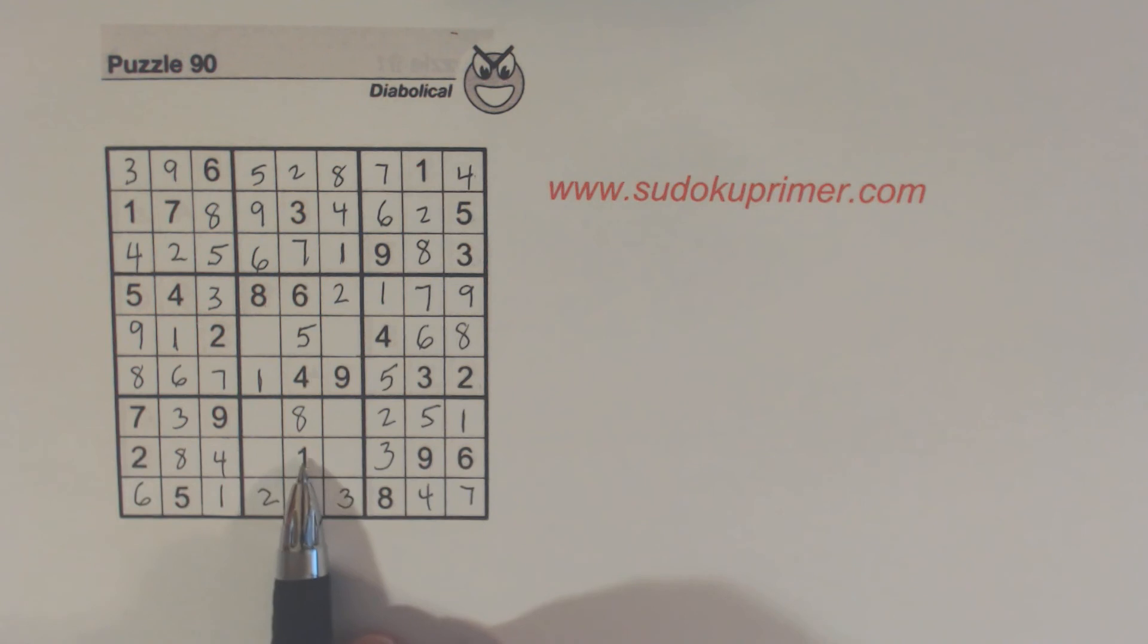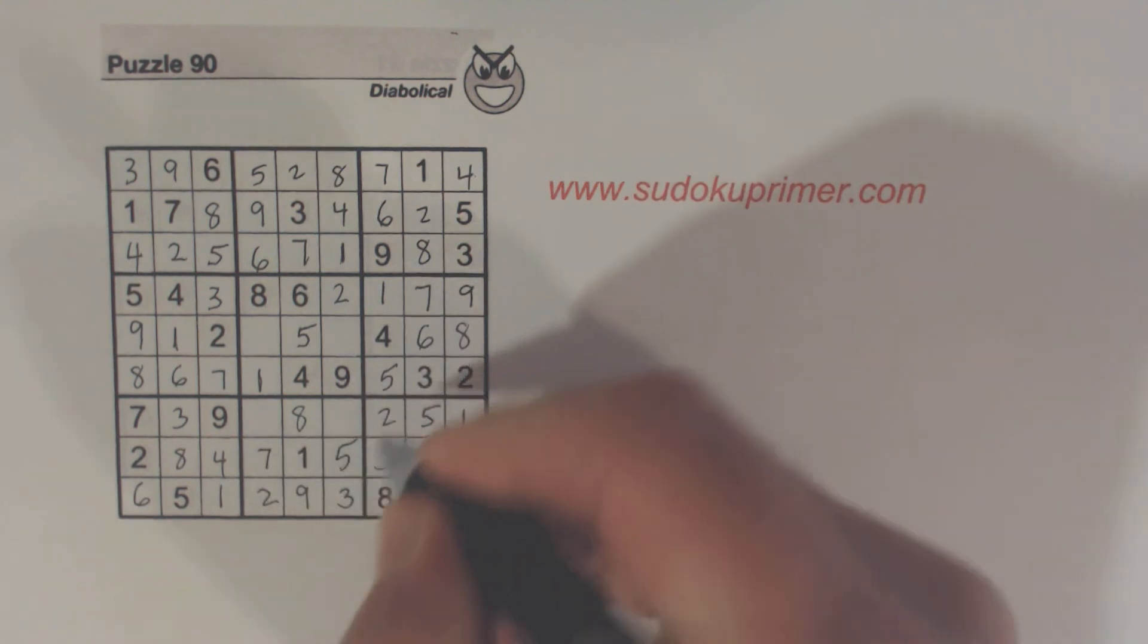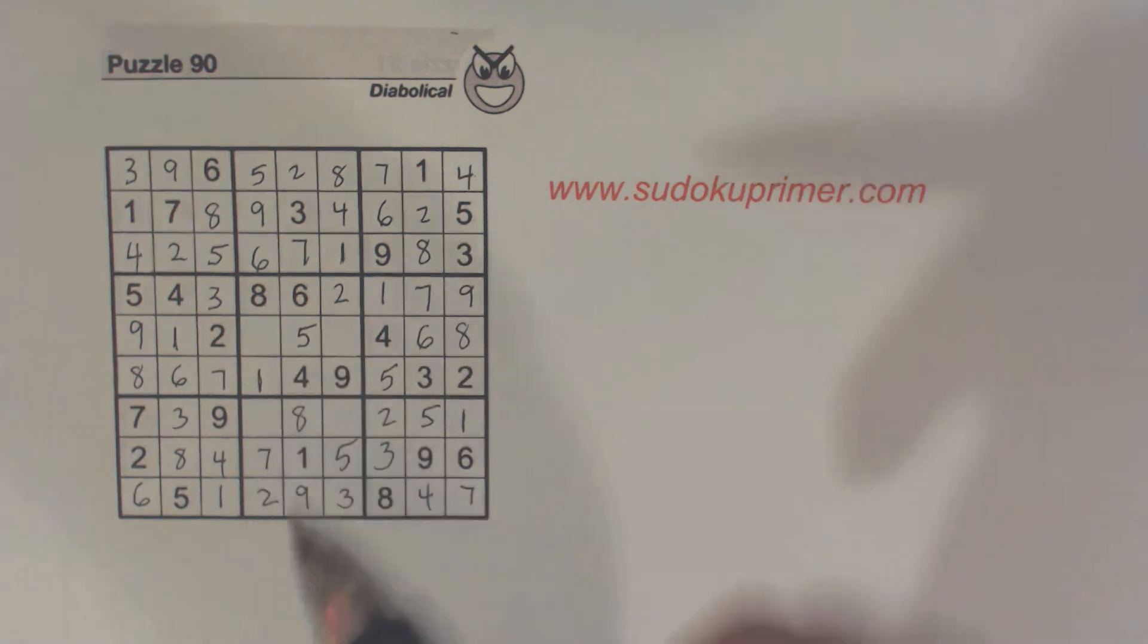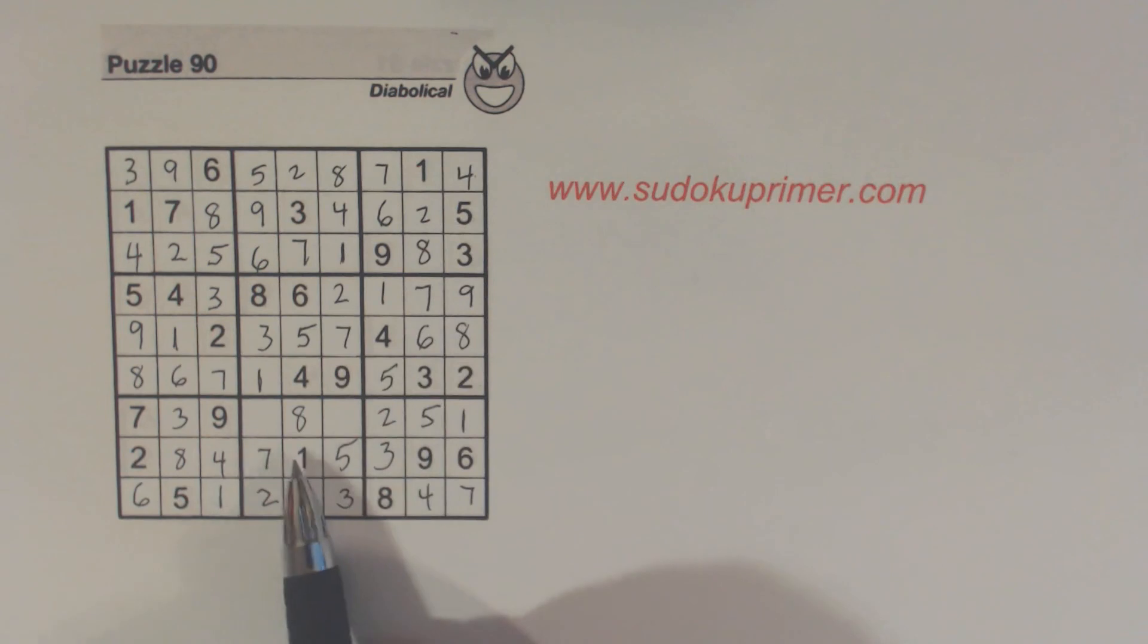Now in this next row we're missing 5, 7. So we can solve those. Here we're missing 3 and 7. And here we're missing 4, 6.